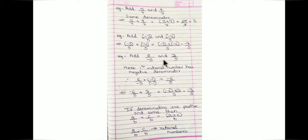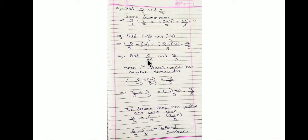Suppose you want to add 6 upon minus 5 and 3/5. Our first rational number has a negative denominator, so we will first make it positive. We multiply 6 upon minus 5 by minus 1 to get minus 6/5.